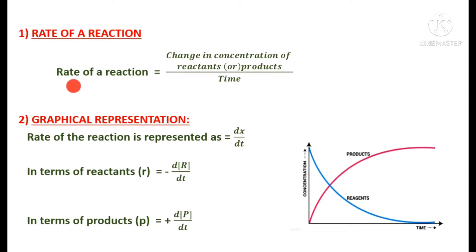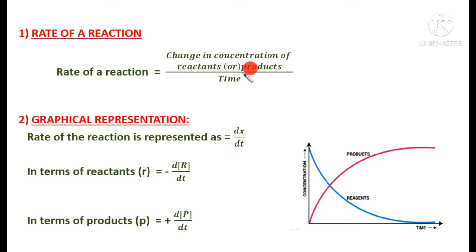What do you mean by rate of a reaction? It may be defined as the change in concentration of any of the reactants or products per unit time. So always there will be a change in concentration of the reactants as well as the products as time goes on.